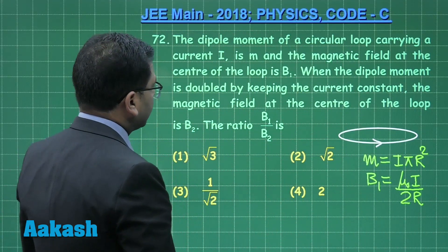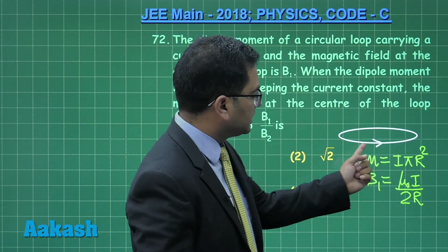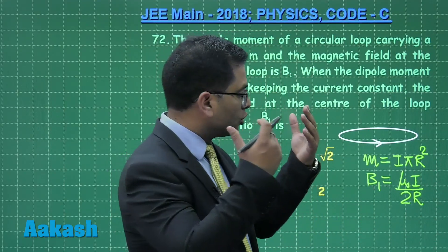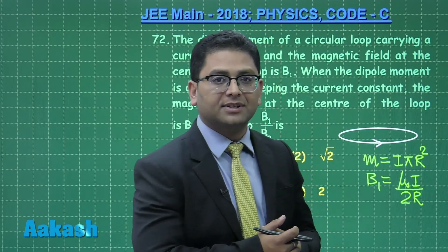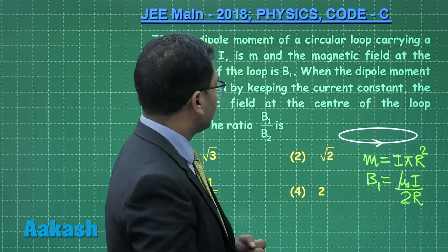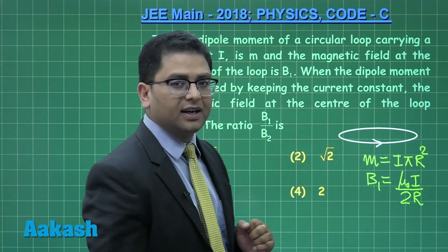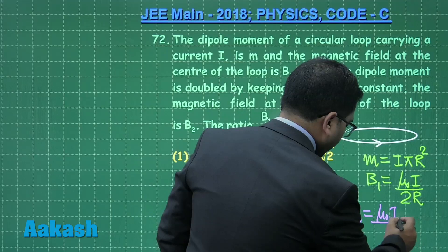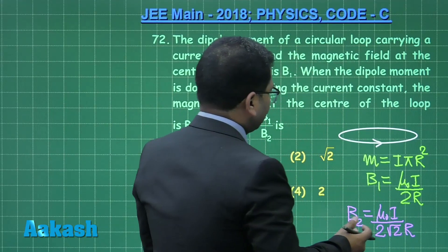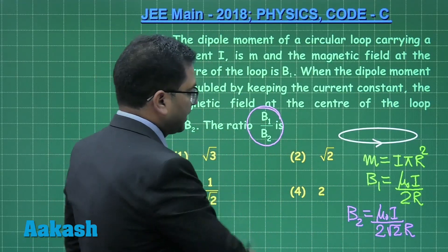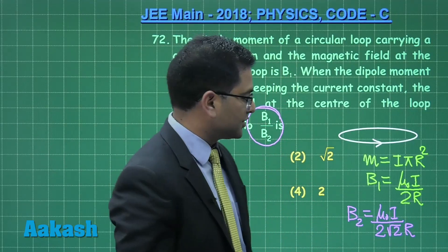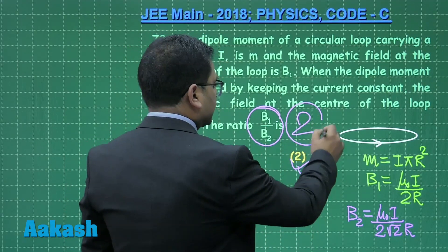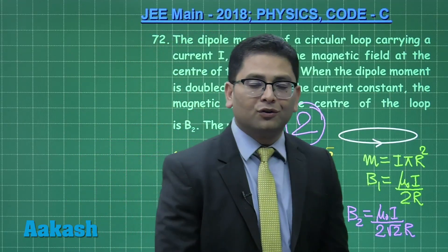When the dipole moment is doubled while keeping the current constant, the radius must become √2·r. The new magnetic field is b2 = μ₀i / (2·√2·r). The ratio b1/b2 is therefore √2. The correct option for question 72 is option number 2.